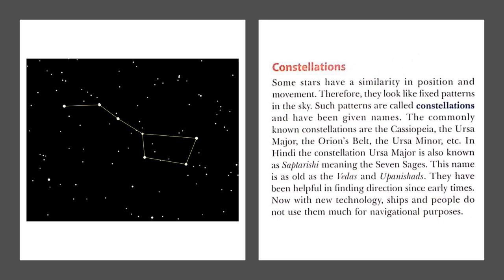They have been helpful in finding direction since early times. The Ursa Major, which is called Sapta Rishi, is used for finding direction - the star points the northern direction. Now with new technology, ships and people do not use this much for navigational purposes. In olden days, people used to see this Sapta Rishi and find out the direction and move accordingly. Now people use new technologies for navigational purposes.